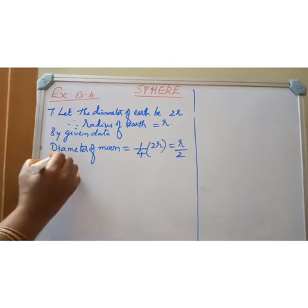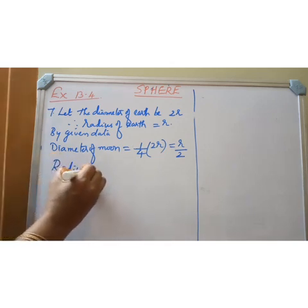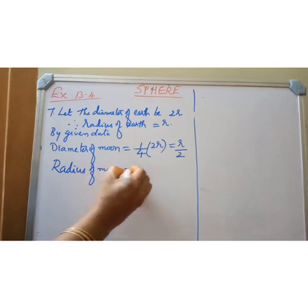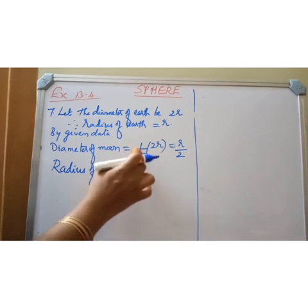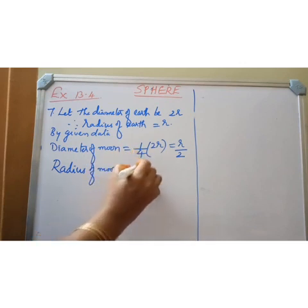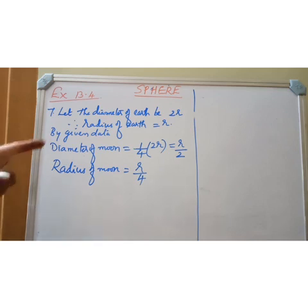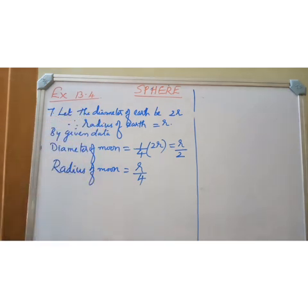The radius of the moon equals the diameter divided by 2, which is R/2 divided by 2, giving R by 4. So we have the radius for the earth as R and the radius of the moon as R/4. Finding the ratio is very easy for us.